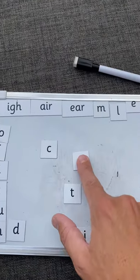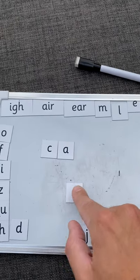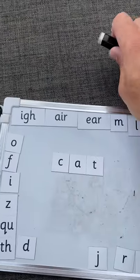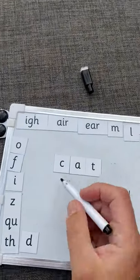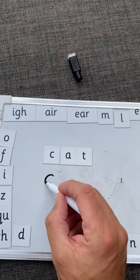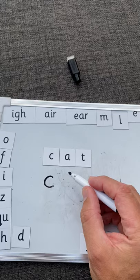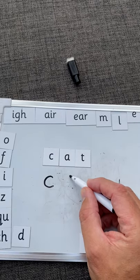When we build on from there, we're getting to a point where we can make 'cat.' I said let's have a go at writing 'cat' and we can concentrate on writing. Now if they're not very good at letter formation, you get something like...